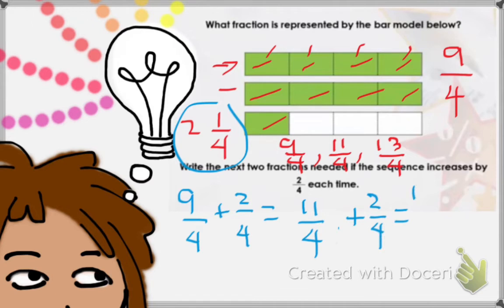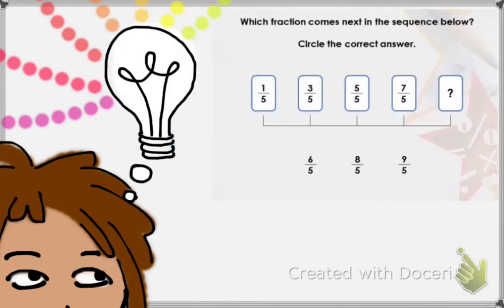As we increase by 2 quarters each time, our next number would be 13 over 4 plus 2 fourths, which would be 15 over 4. So 15 quarters. Now let's move on to our next example: which fraction comes next in the sequence below? Circle the correct answer.